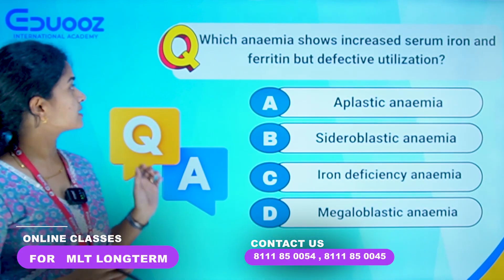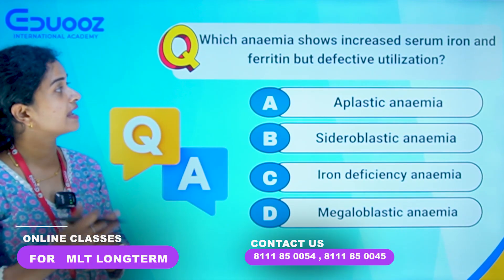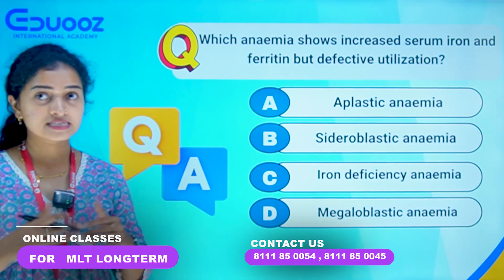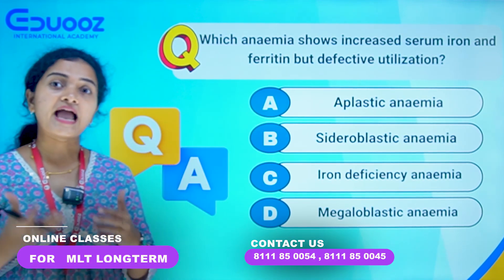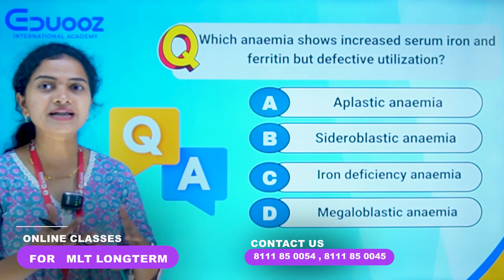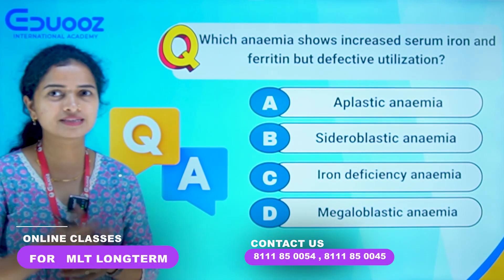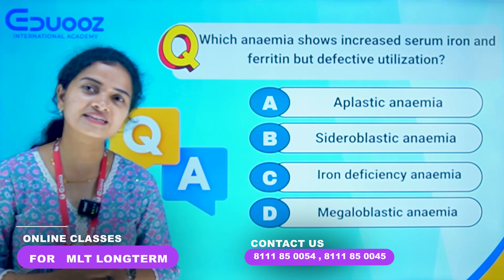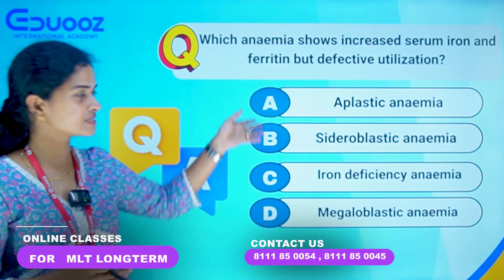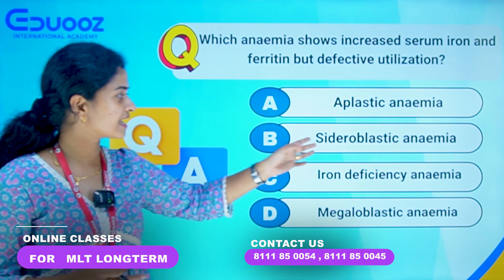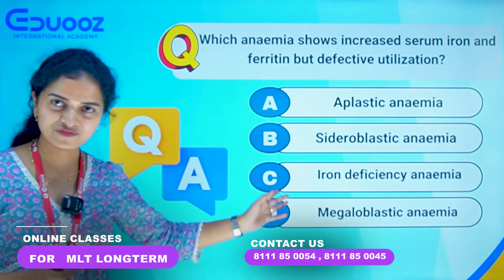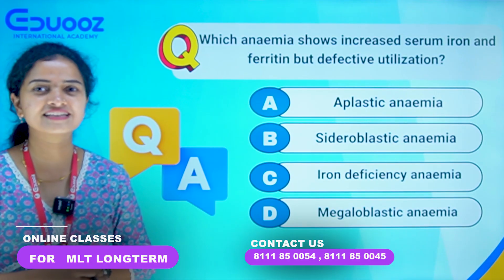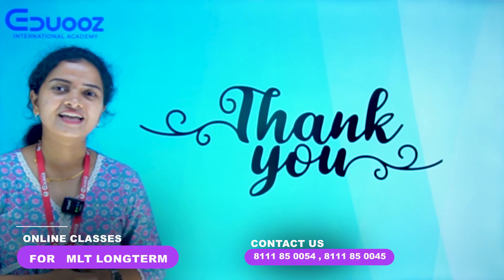Next question: Which anemia shows increased serum iron and ferritin? Options are Aplastic Anemia, Iron Deficiency Anemia, and Megaloblastic Anemia. Comment your answer — thank you.